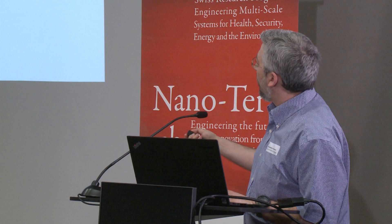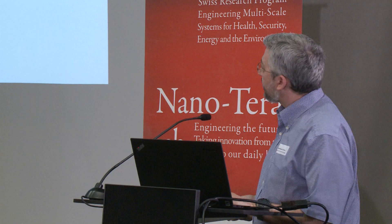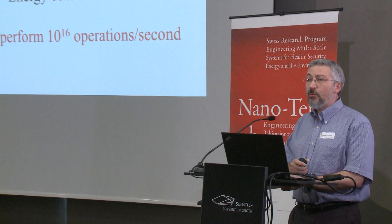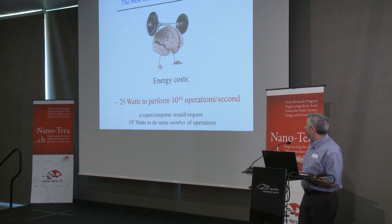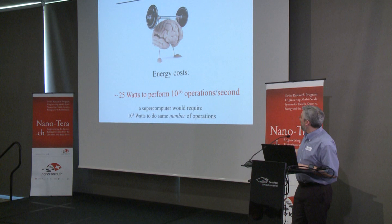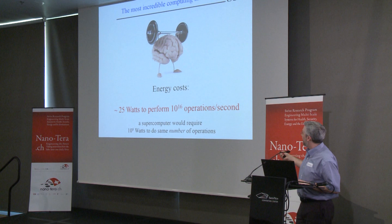What do we do? We suggest learning directly from nature. Nature has created the most incredible computing machine we carry on our shoulders: the brain itself. The brain operates at very low energy — about 25 watts — performing 10 to the 16 operations per second. A supercomputer would require 10 to the 8 watts to do the same number of operations, and is not even close to the capability and massive parallelism that our brain affords.